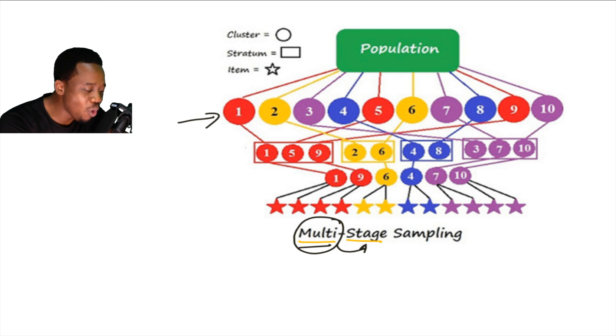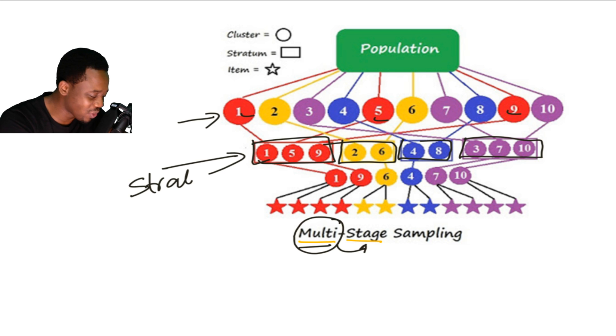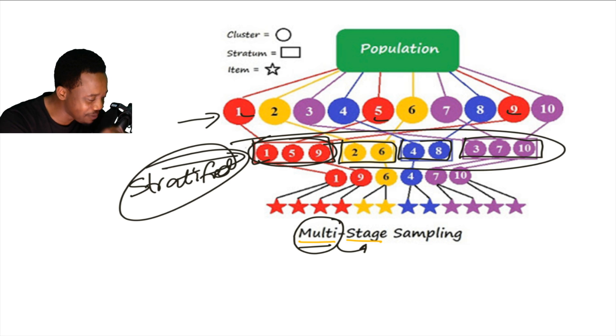For instance, in this population the first thing I did here, you can see that they are heterogeneous. What I did is if I'm picking them according to colors, I'm putting the red in one box, putting the yellow in another box, putting the blue in another box, and I put this color in this box. This is stratification. Each of them is a stratum and all of them are strata. That is the stratified method I'm using here.